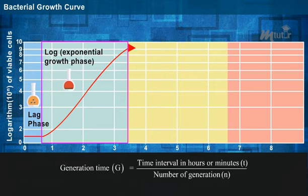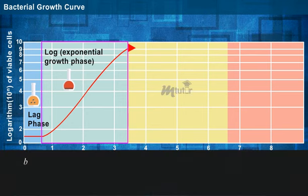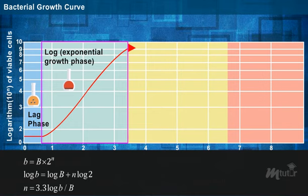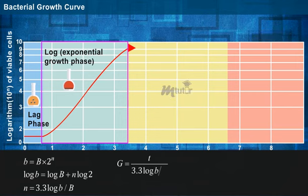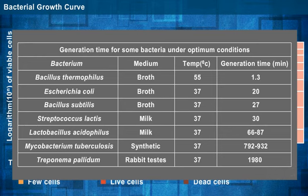For instance, let us consider the number of bacteria in the beginning as capital B and the number of bacteria at the end of the time interval as small b. Thus, growth of bacteria can be expressed as small b which is equal to capital B multiplied by 2 to the power n. By simplifying using log, we get log b is equal to log B plus n log 2 where n is equal to 3.3 log b divided by B. Thus, the generation time g is equal to t divided by 3.3 log b by B. Basically, the generation time varies with bacteria. The table reveals the generation time of different bacteria under optimal growth conditions.